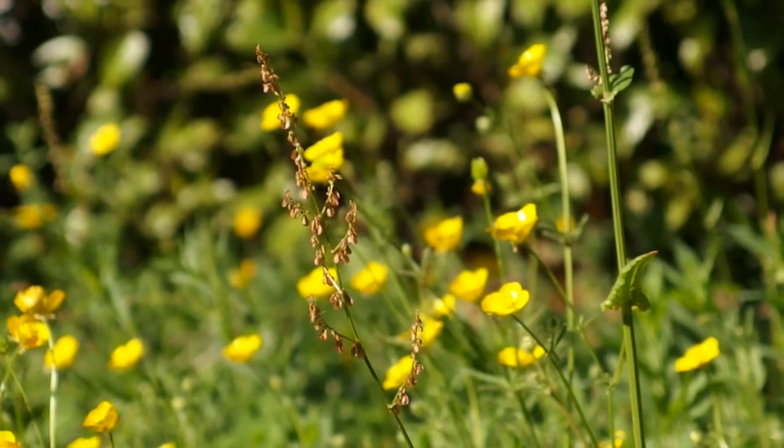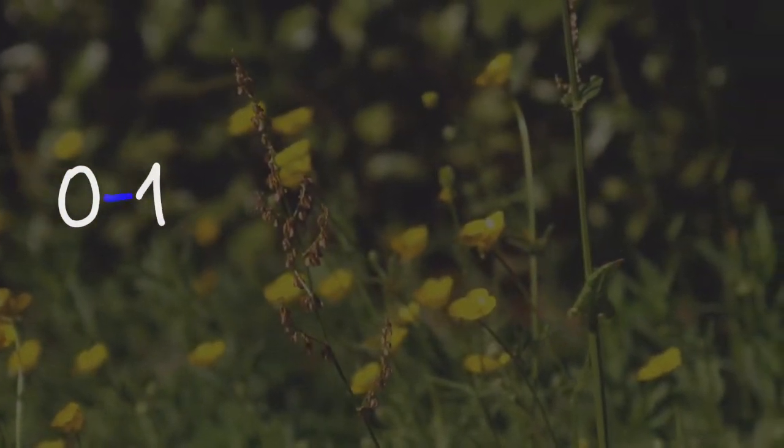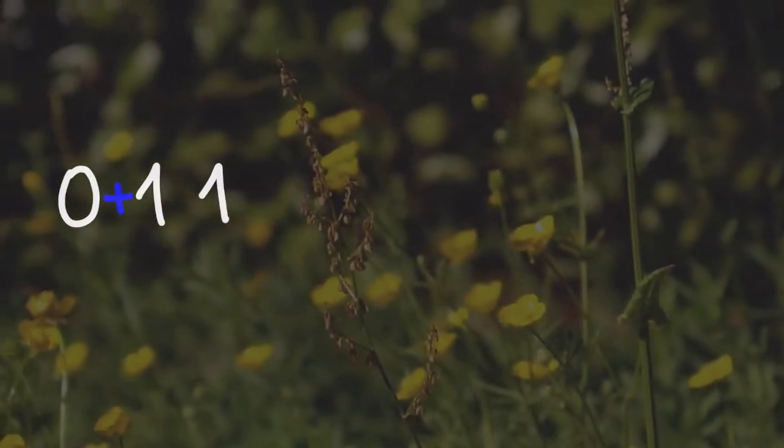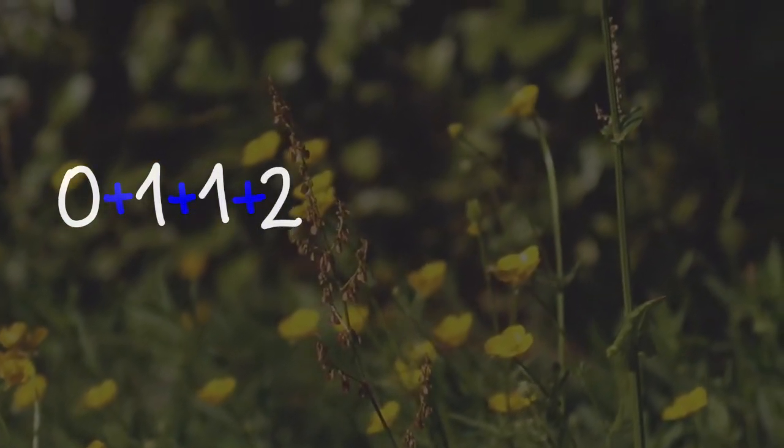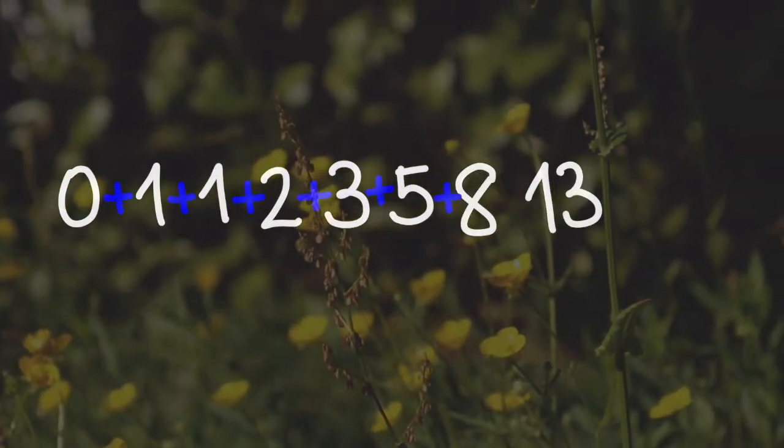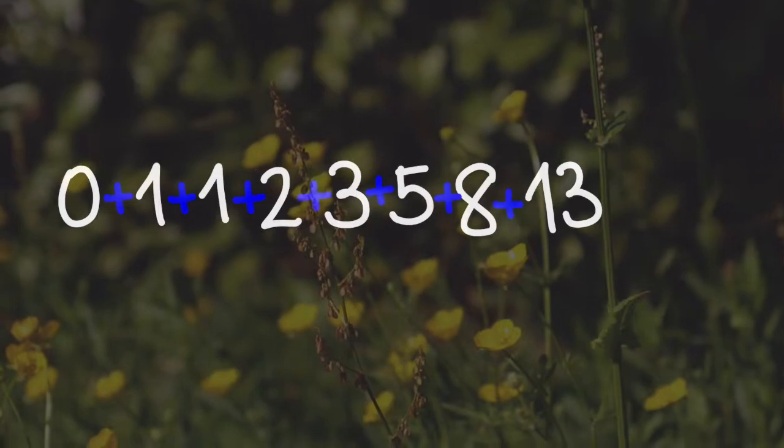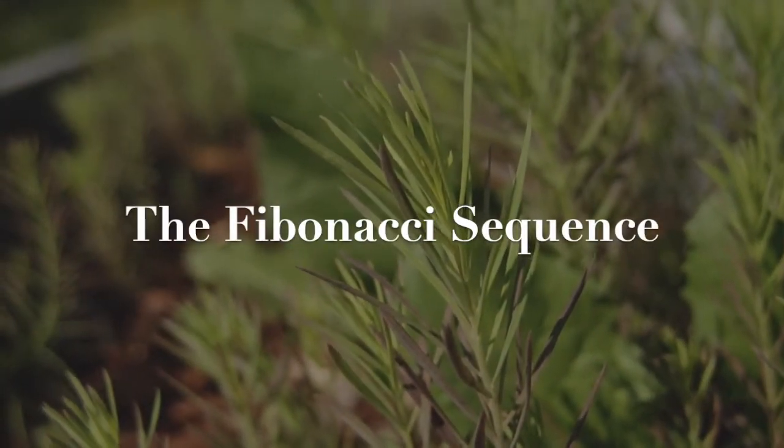First, we need to write down some simple numbers. Write down a zero, then a one. Now add these together. You get one. Now add one and one together. Continue adding your newest number to the number before. What you'll observe is that not only do you never come to an end, but you're also starting to write down a sequence. This is the Fibonacci sequence.